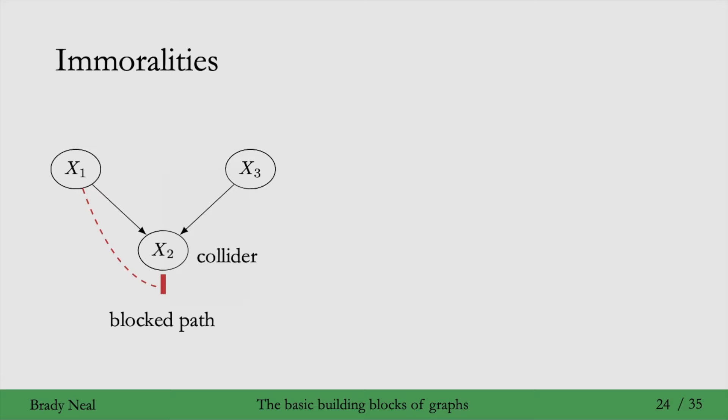And just as we did a proof for conditional independence in the chains and forks, we can do a proof for unconditional independence here with immoralities. So, we start by just marginalizing out x2. And next, we're just going to use the Bayesian network factorization.